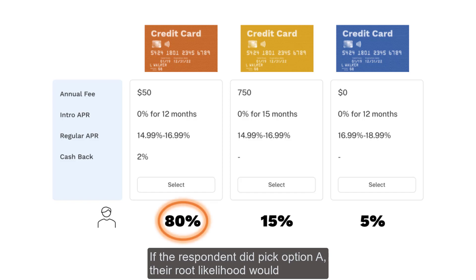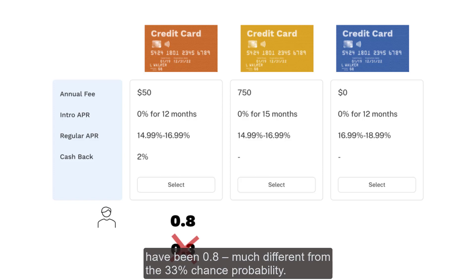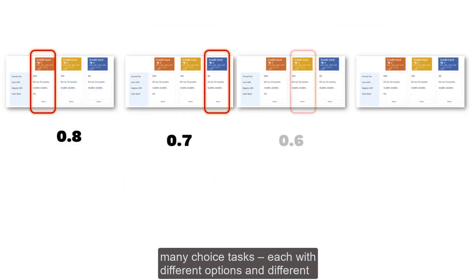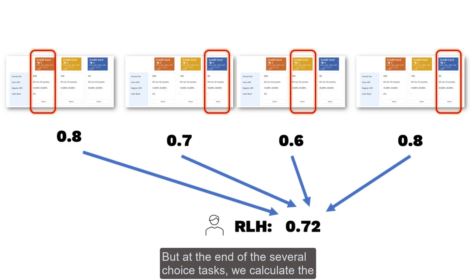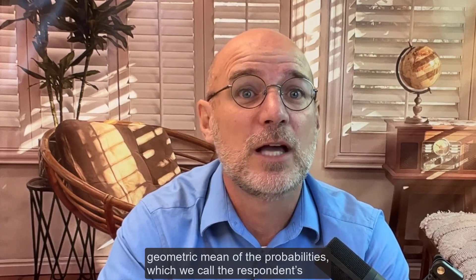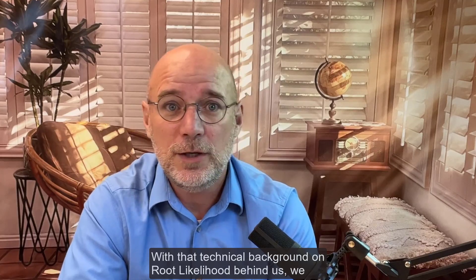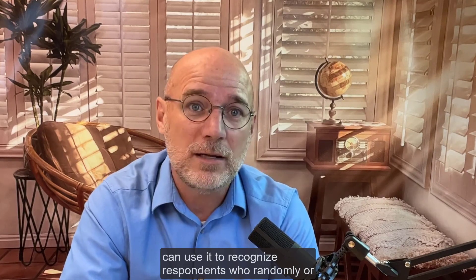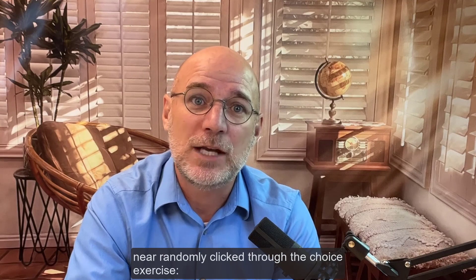If the respondent did pick option A, their root likelihood would have been 0.8, much different from the 33% chance probability. It gets a little more complex because each respondent goes through many choice tasks, each with different options and different probabilities to be selected. But at the end of the several choice tasks, we calculate the geometric mean of the probabilities, which we call a respondent's RLH score. With that technical background on root likelihood behind us, we can use it to recognize respondents who randomly or near randomly click through a choice exercise.